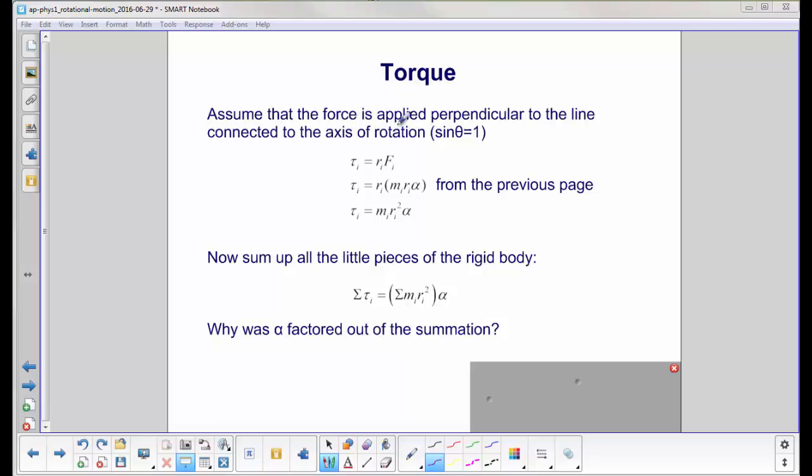Let's assume that the force is applied perpendicular to that line that connects the small piece of mass to the axis of rotation. That will give us sine theta equals 1. So we now have torque on any little piece, torque i equals R i F i.